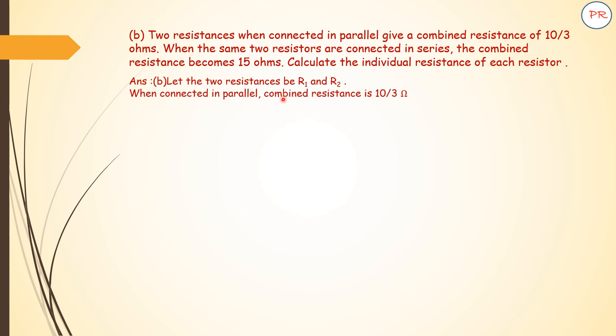When they are connected in parallel, combined resistance is 10 by 3 ohms. What is the rule for parallel combination? 1 upon Rp equals 1 upon R1 plus 1 upon R2. This becomes 1 divided by 10 by 3 equals 1 upon R1 plus 1 upon R2. So 3 by 10 equals 1 by R1 plus 1 by R2. Let us call this equation 1.